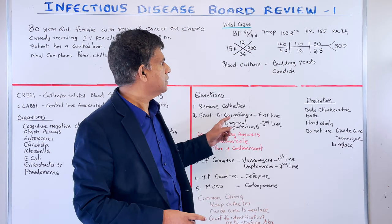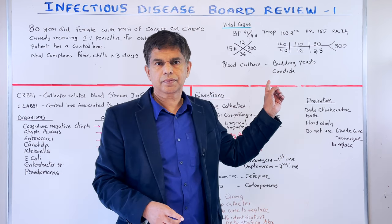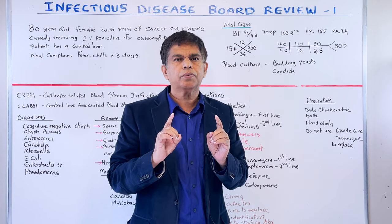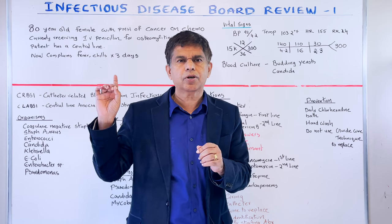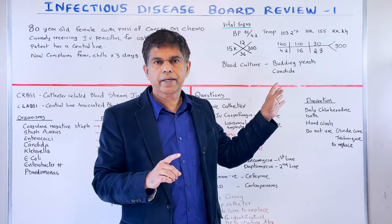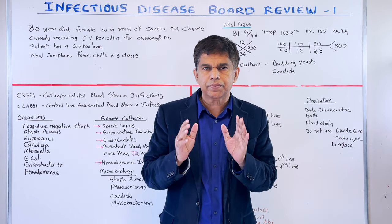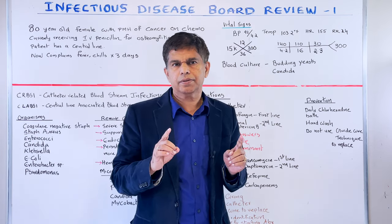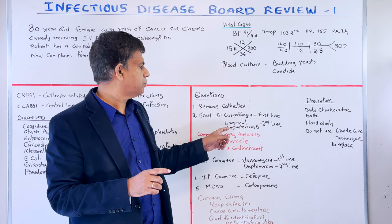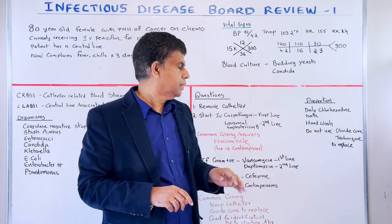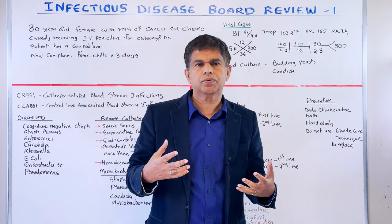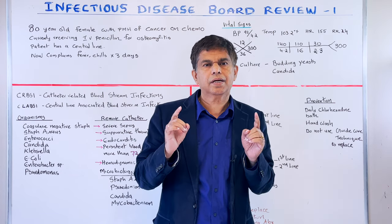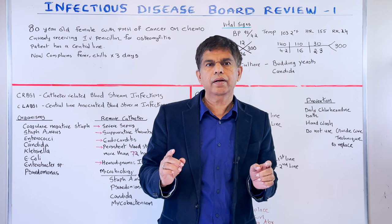The second issue: the patient has budding yeast — Candida. People automatically assume it's contamination, but that is the most common wrong answer. This patient is immunocompromised, so take it very seriously. The first-line treatment is IV caspofungin. The second line is liposomal amphotericin B. Do not pick fluconazole — fluconazole does not cover all Candida strains.